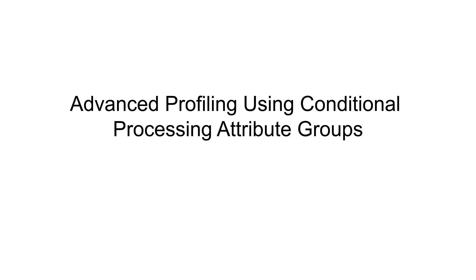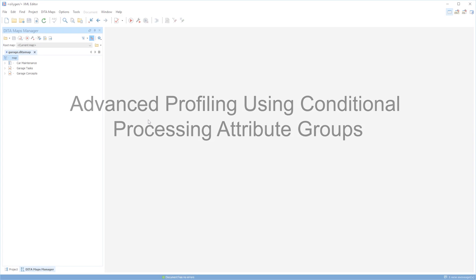In this video demonstration, I will present Oxygen support for conditional profiling attribute groups, a feature that was added in version 21.0. Conditional processing attributes can be specified using grouped values, and this is intended for situations where an attribute applies to multiple specialized subcategories.